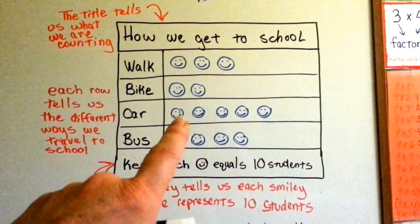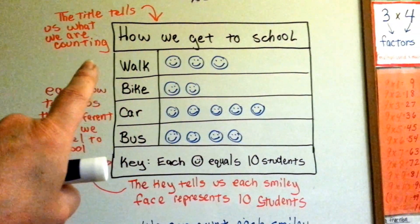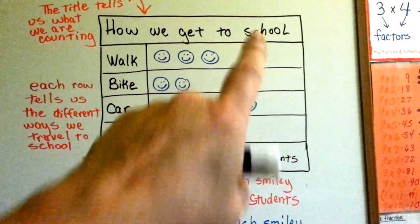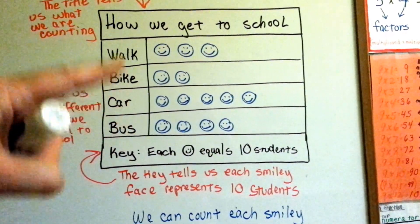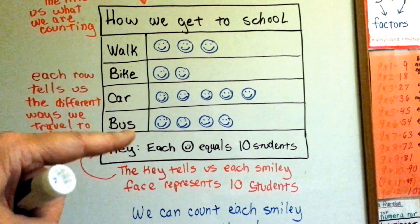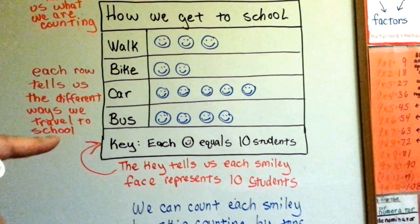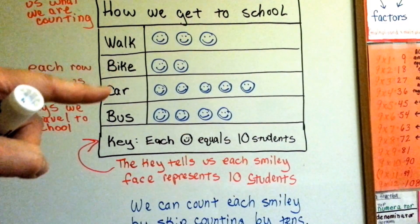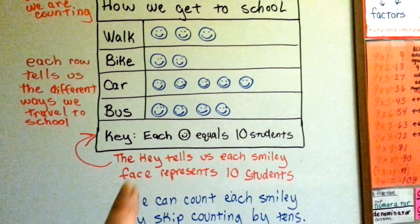Here's a picture graph. The title tells us what we're counting — how we get to school. Each row tells us the different ways we travel to school: walk, bike, go by car, go by bus.